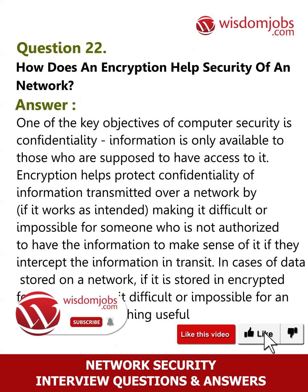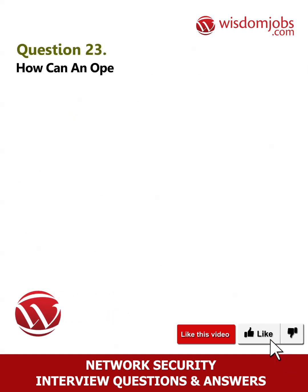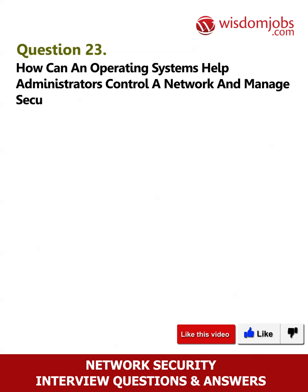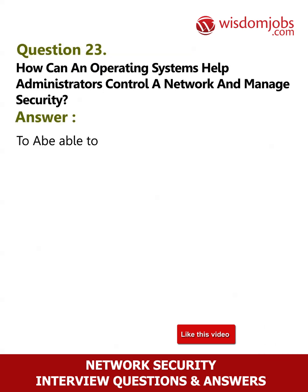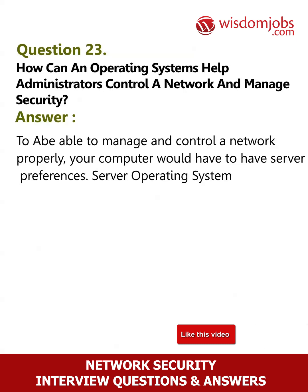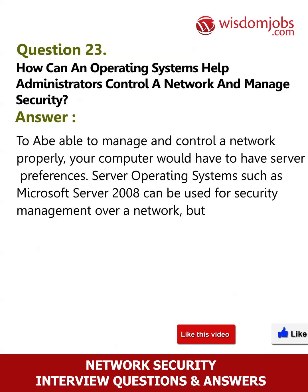Question 23: How can an operating system help administrators control a network and manage security? To be able to manage and control a network properly, your computer would have to have server preferences. Server operating systems such as Microsoft Server 2008 can be used for security management over a network, but require a fair bit of insight to operate and are mostly used by IT professionals only.